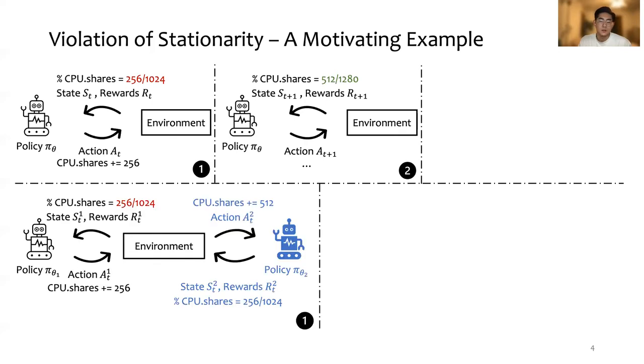However, let's consider the scenario where there are two agents. Similar to the above case, based on the current state, the action given by the learned policy is to scale up the CPU shares by 256, but at the same time, the action of agent number 2 is to scale up by 512.